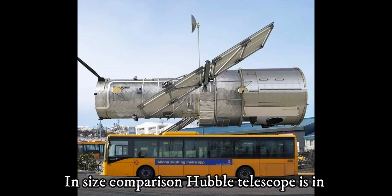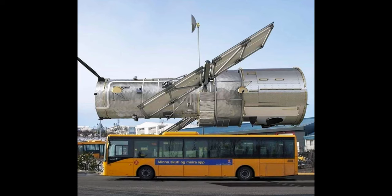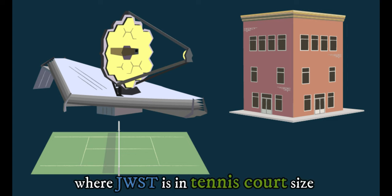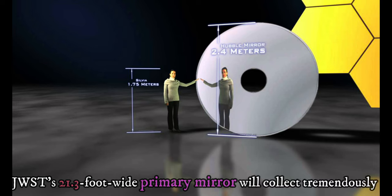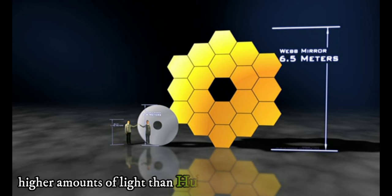In size comparison, Hubble telescope is in a size of a typical school bus where JWST is in tennis court size. JWST's 21.3 foot wide primary mirror will collect tremendously higher amounts of light than Hubble's 7.9 foot primary mirror.